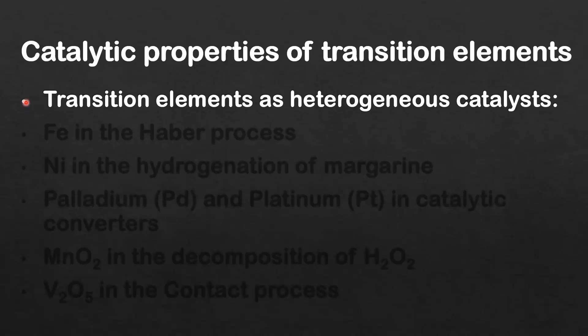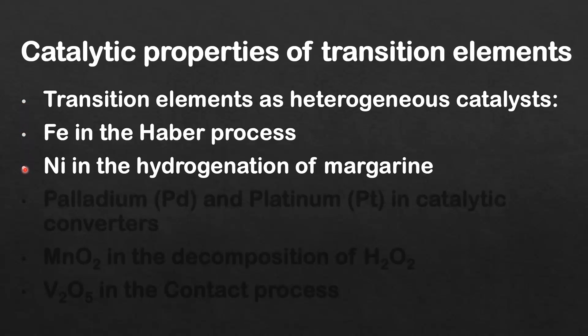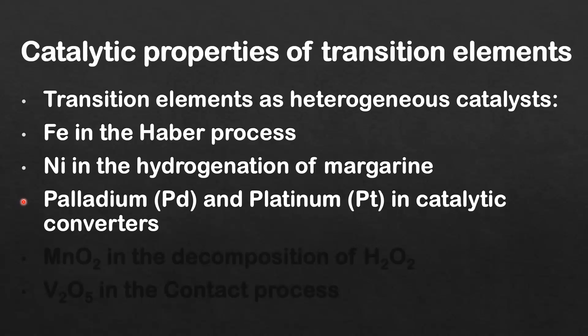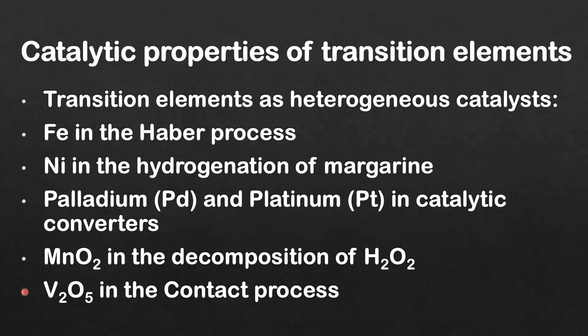First we look at some examples of transition elements as heterogeneous catalysts. First is iron in the Haber process. Nickel in the hydrogenation of margarine — that's when alkenes are converted to alkanes. We have palladium and platinum in catalytic converters. Next is manganese dioxide in the decomposition of H2O2, which is hydrogen peroxide. And finally we have vanadium pentoxide in the contact process.